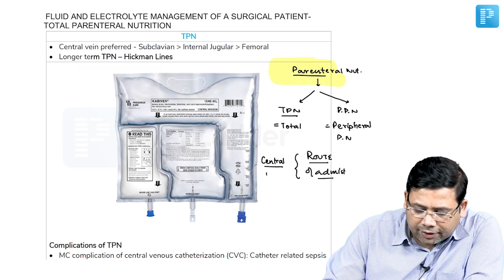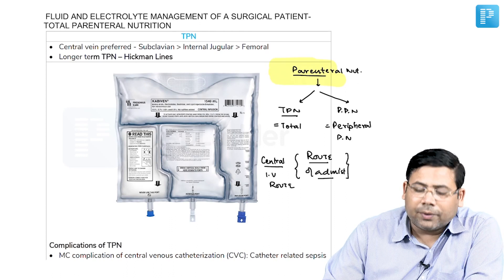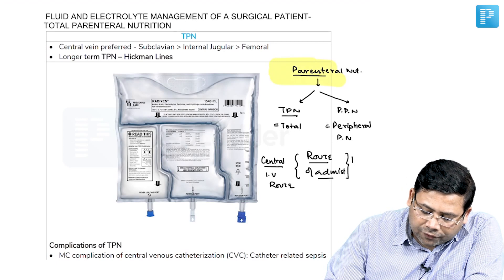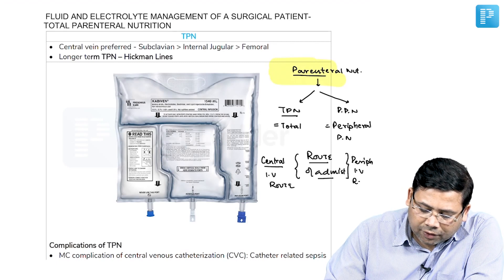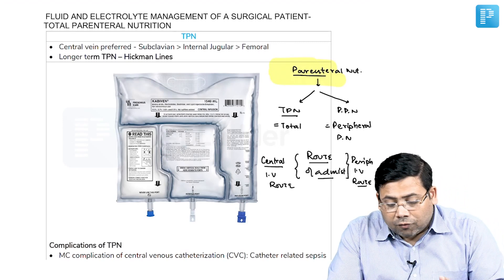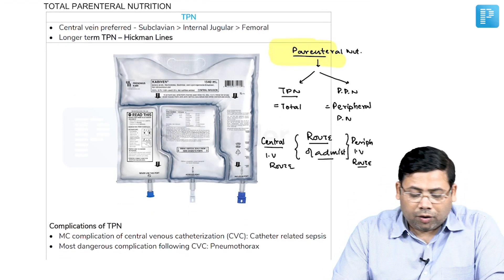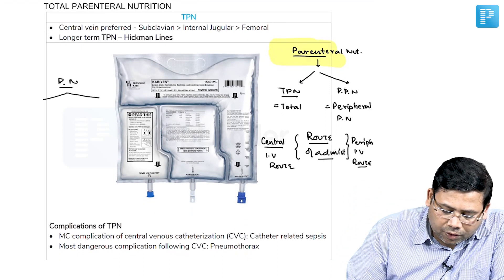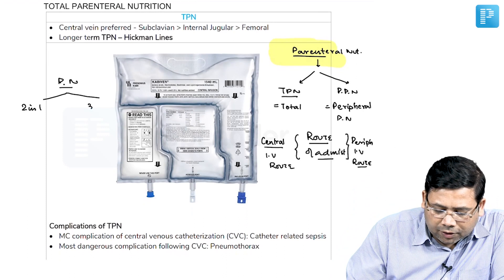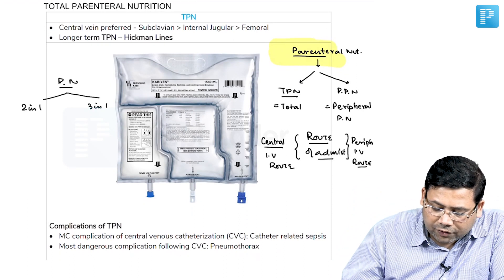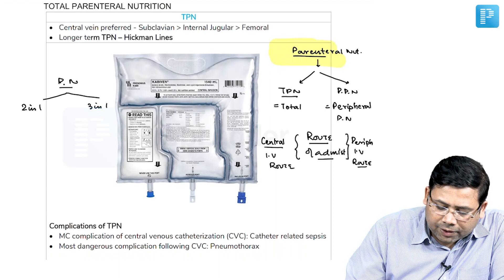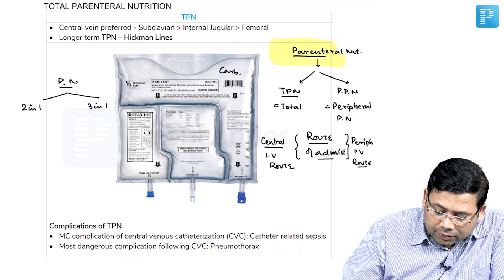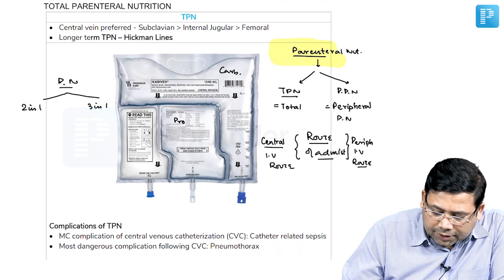PPN is via the peripheral intravenous route. Both TPN and PPN are very important. Both these parenteral nutrition forms can be available in two formulations: two-in-one and three-in-one. The image in front of you shows three compartments — one for carbohydrates, one for proteins, and one for lipids.